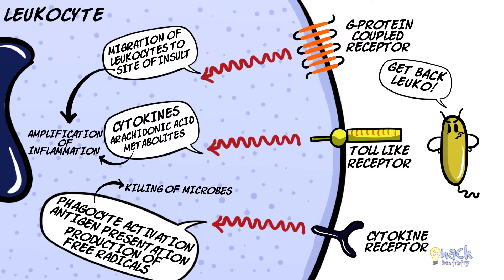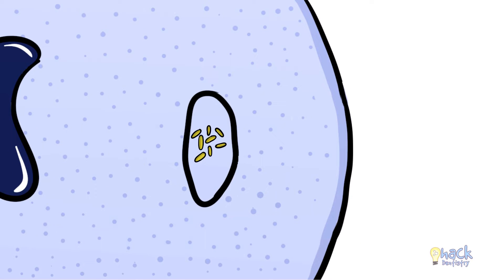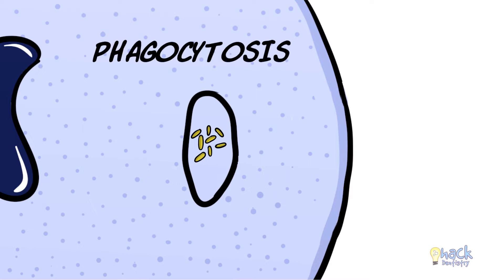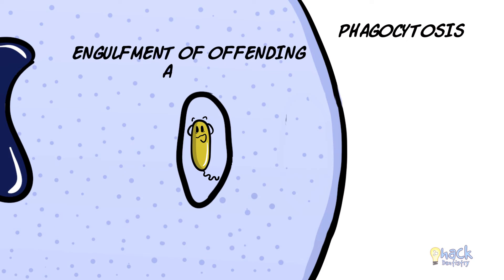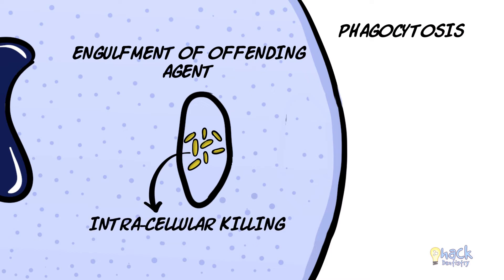Apart from amplifying the inflammatory response, leukocytes also eliminate offending agents like microbes by ingesting and destroying them, a process called phagocytosis. Phagocytosis involves three steps: the attachment of the offending agent or microbe to the phagocyte receptors, engulfment of the offending agent or microbe, and intracellular killing of the offending agent or microbe.